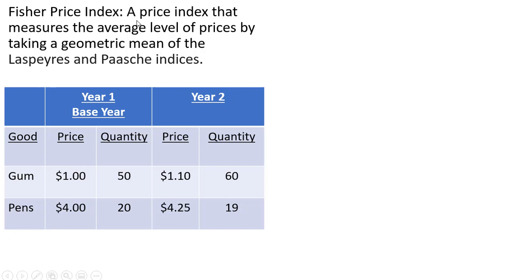So to calculate the Fisher Price Index, we're going to see that the Fisher Price Index measures the average level of prices by taking a geometric mean of the Laspeyres and Paasche indices.